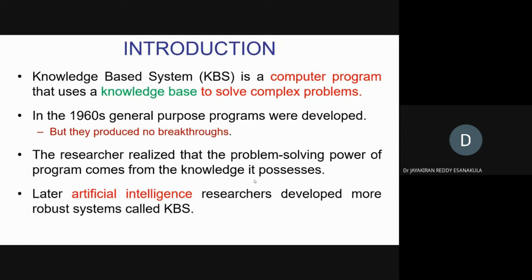Later, artificial intelligence researchers developed more robust systems called KBS. At that stage, artificial intelligence came into existence — that is the early stage of AI. Those techniques were adapted to these systems, and researchers started solving real-world problems using these techniques. They developed systems called KBS, and that KBS is robust — meaning it will sustain whatever problem it gets and solve it.